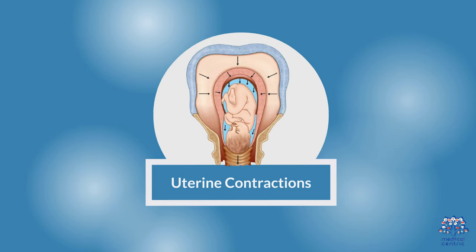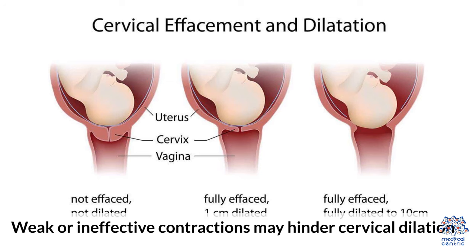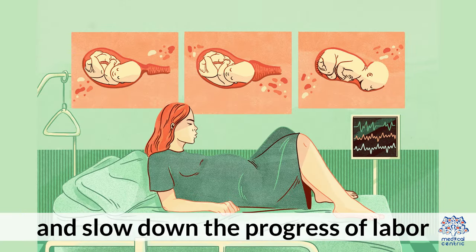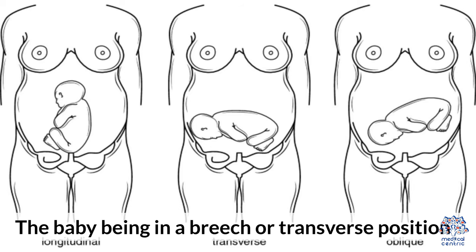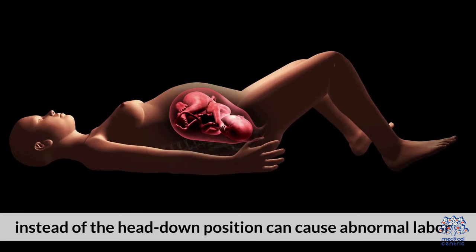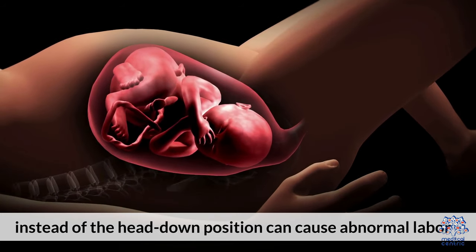2. Uterine contractions: weak or ineffective contractions may hinder cervical dilation and slow down the progress of labor.